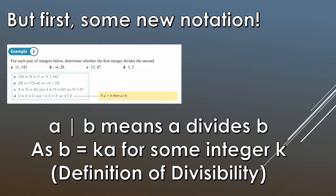So first we need to look at some new notation. If we look at example 2 here it's asking you to find or determine whether the first integer divides the second. The new notation is this little line here, so we would say this as A divides B.